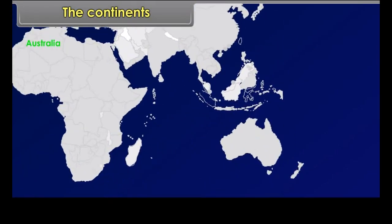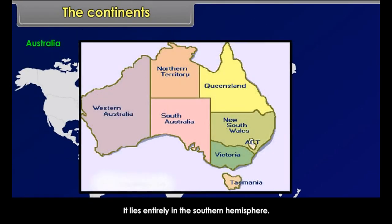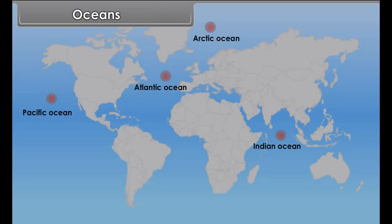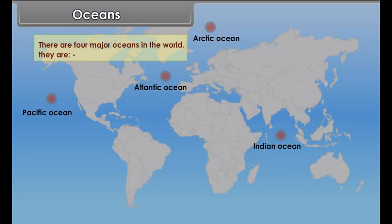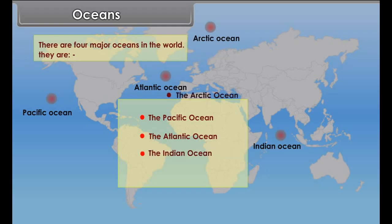Australia. Australia is the smallest continent in the world. There are four major oceans in the world: the Pacific Ocean, the Atlantic Ocean, the Indian Ocean, and the Arctic Ocean.